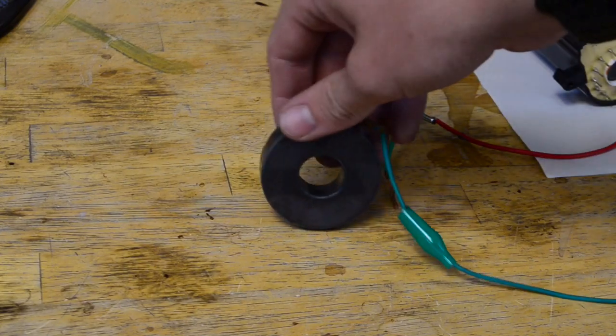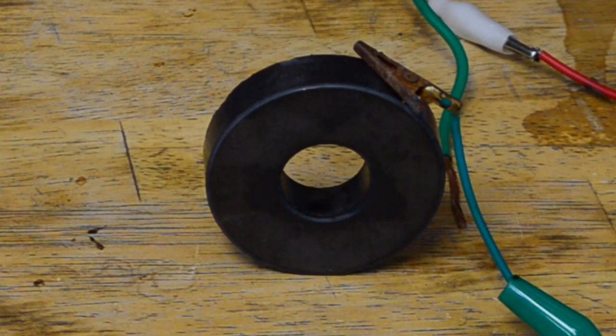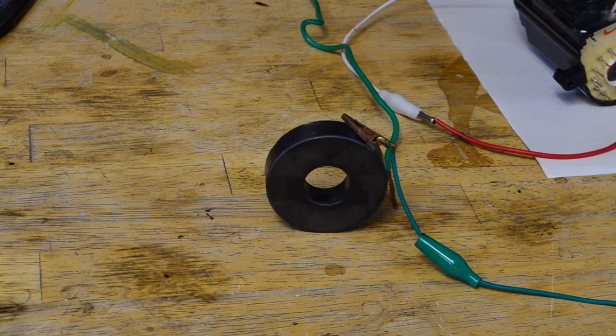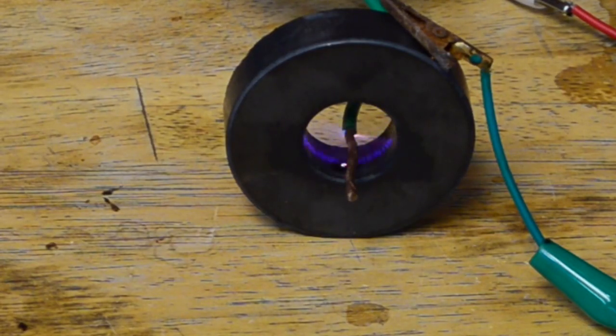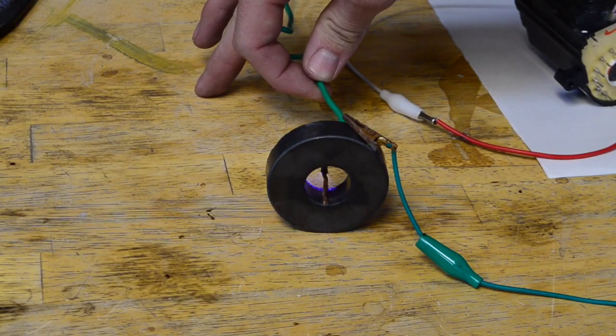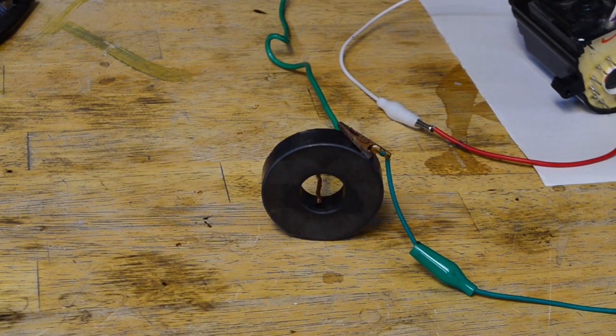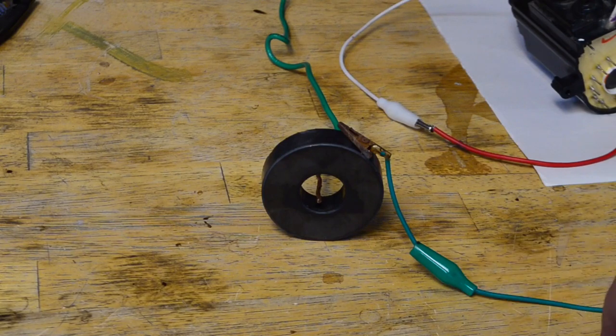Now if you take a ring magnet like this—I got this one out of a magnetron from a microwave—watch as I turn on the high voltage and put it in between this. Now what I'm going to do is solder all of this together and make it a more permanent project.